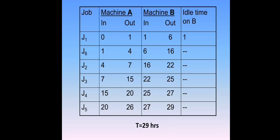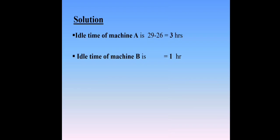Now we find out the idle time on capital B. Capital B only rests for 1 hour, so the idle time on capital B is 1. Now we find out the idle time of machine A. The final total time is 29 hours; machine B total time is 29 hours and machine A total time is 26 hours. So 29 minus 26 equals 3 hours. Therefore, the idle time of machine A is 3 hours, and the idle time of machine B is 1 hour.